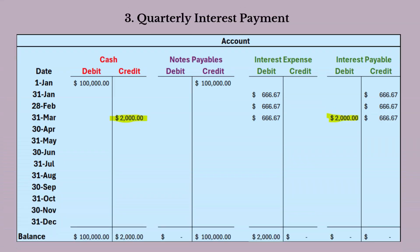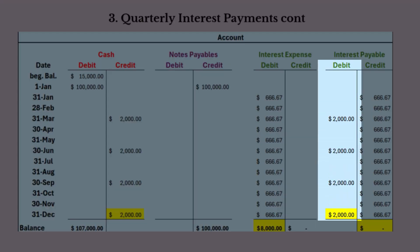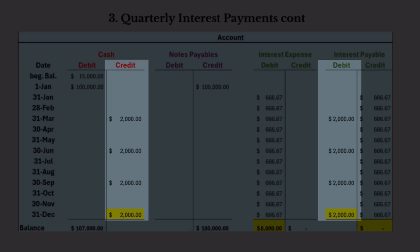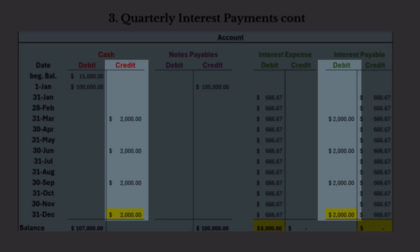The third journal entry covers the quarterly interest payments. At the end of the first quarter, the company pays $2,000 in interest, which reduces the interest payable liability. Interest payable is debited to reduce the liability accrued over the first three months, and cash is credited to reflect the payment made to the lender. The company makes another $2,000 interest payment at the end of the second, third, and fourth quarters with the same journal entry. The sum of the accrued interest payable equals the sum of the interest payments, so at the end of the year the interest payable account shows a zero balance.